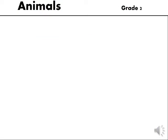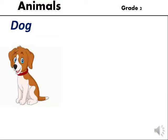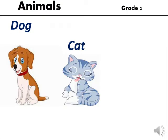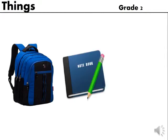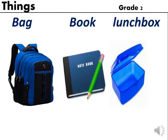Animals also have names like dog, cat and giraffe, and they are also nouns. There are many things which we see, touch and hold that are also nouns, like a bag, book and lunch box.